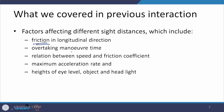Dear students, we are continuing our interaction on geometric design. We started with sight distance requirements and have discussed various factors affecting sight distances, including friction, maneuver time, the relation between speed and friction coefficient, maximum acceleration rate related to speed, heights of eye level, object, and headlight beam angle — which determines visibility ahead of the vehicle during nighttime.